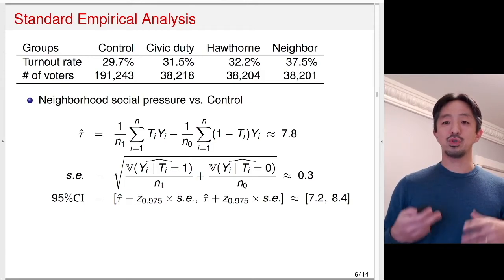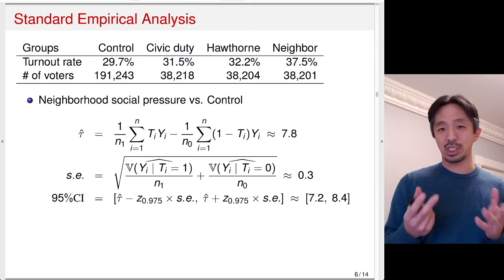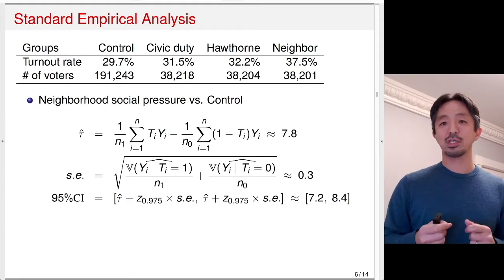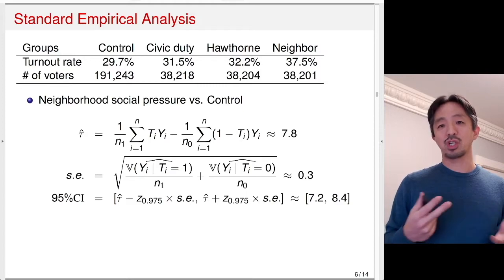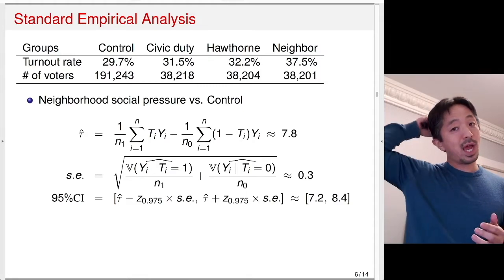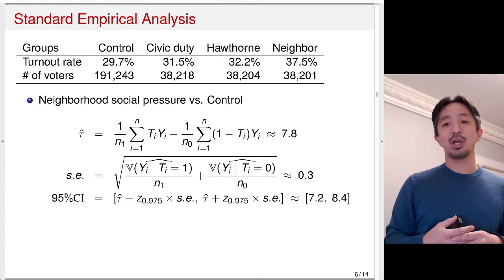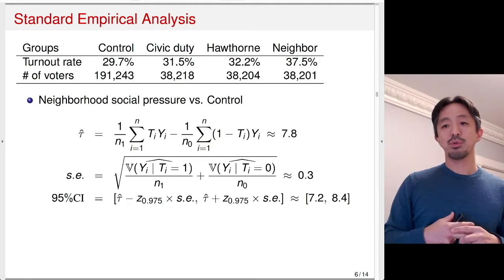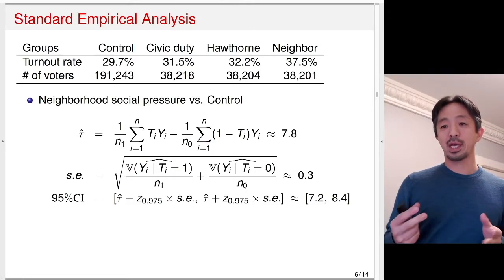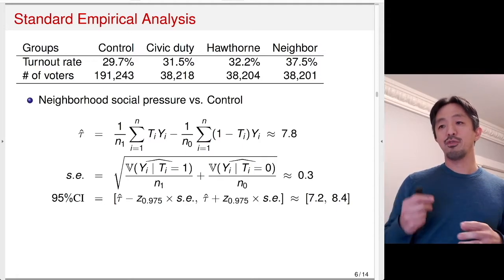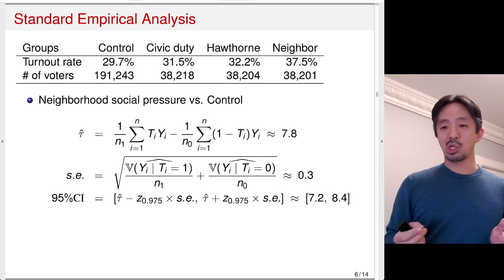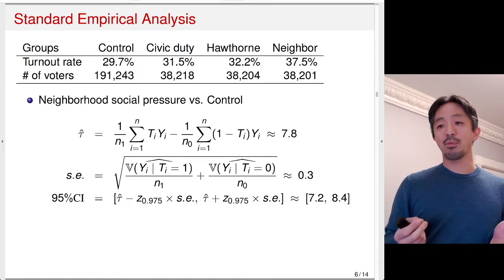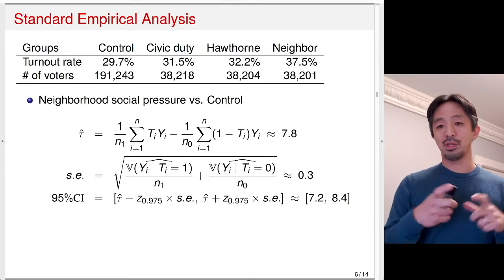We can look at the effect of the neighborhood social pressure message relative to the control group using the difference-in-means estimator. We compute the mean turnout rate — since the outcome is binary (voted or not), the mean is the turnout rate. The estimator τ̂ is the mean of the treatment group minus the mean of the control group, where T_i equals 1 for the neighborhood social pressure group and 0 for the control group. The difference is 7.8 percentage points — a very large increase from just sending a postcard.